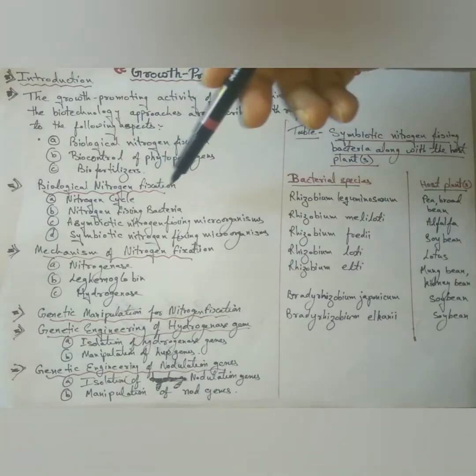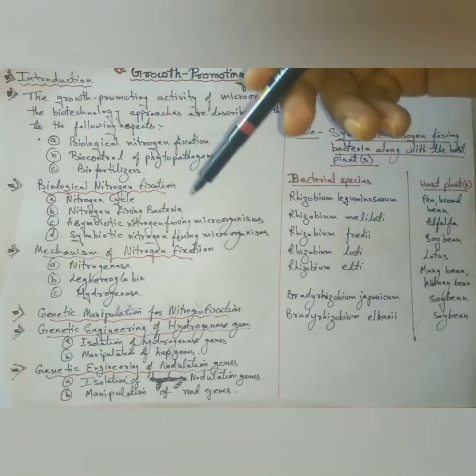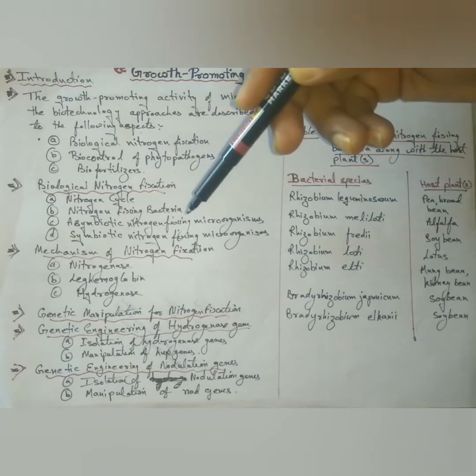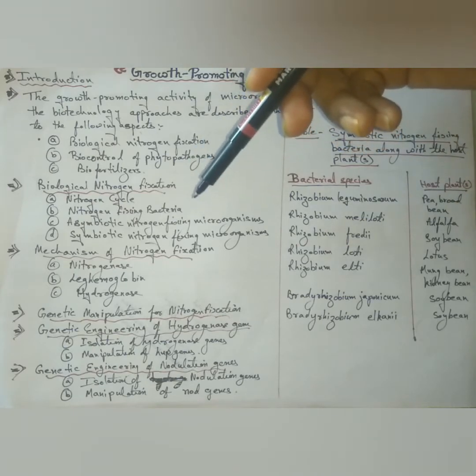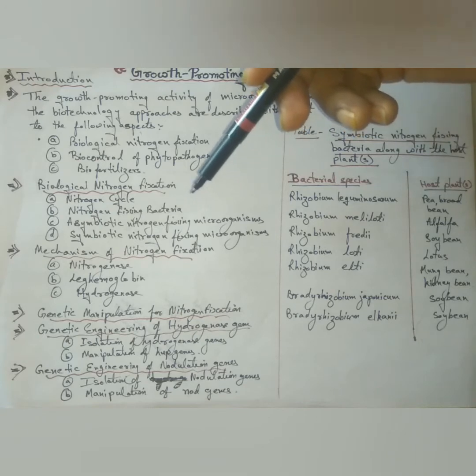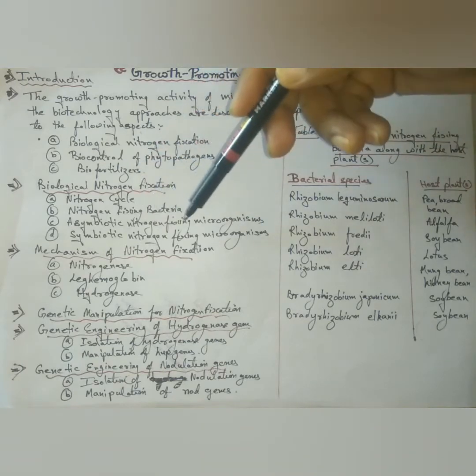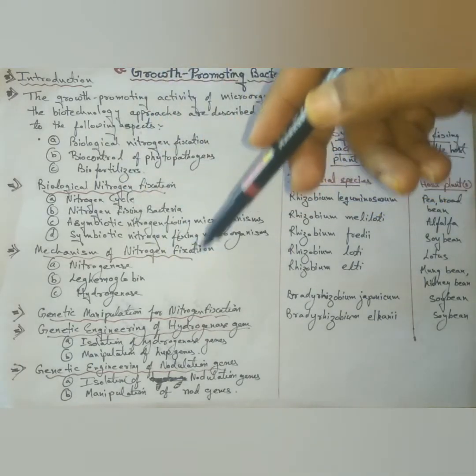Next, we come to nitrogen fixing bacteria. It is estimated that above 50% of the nitrogen needed by the plant comes from nitrogen fixing bacteria. These are two types of nitrogen fixing microorganisms, asymbiotic and symbiotic.